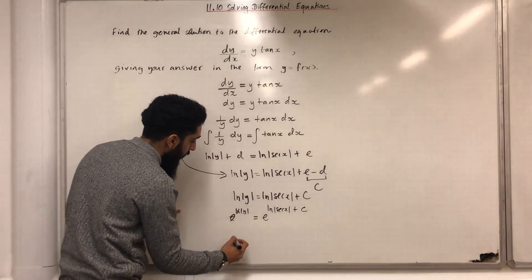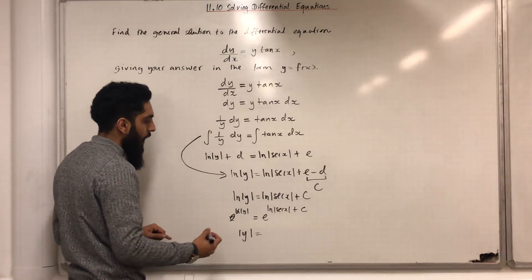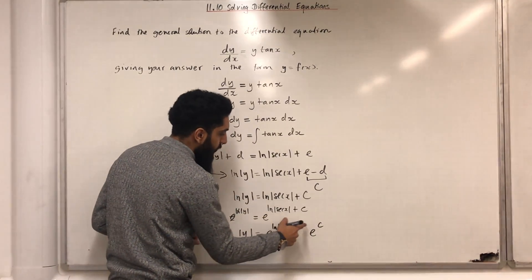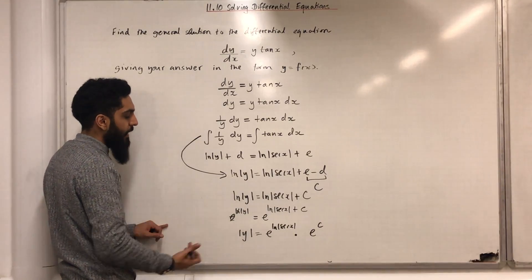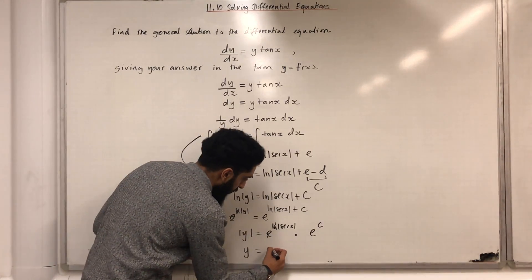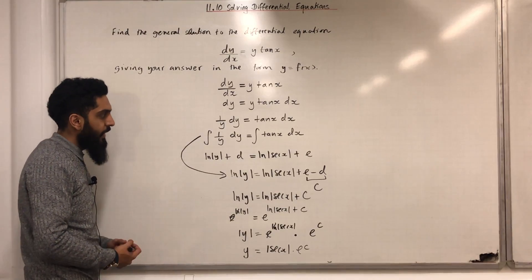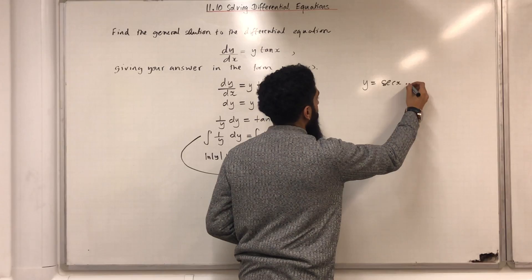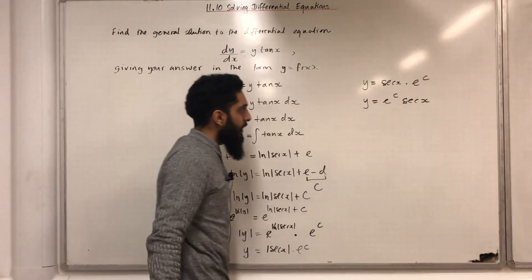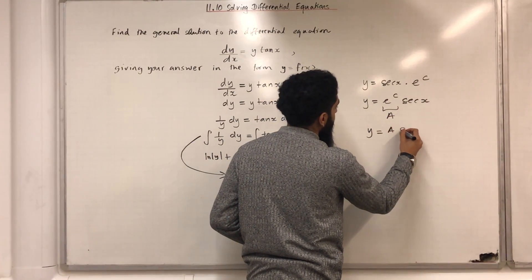Now e and ln cancel, so I have |y| equals. This I can split into two parts using laws of indices: e to the power ln|sec x| multiplied by e to the power c — I need to multiply because these two powers are added. I can cancel the e and ln, giving |y|, which is just y, equals |sec x| multiplied by e to the power c. The mod of sec x is just sec x, so y equals sec x multiplied by e to the power c, which I can write as y equals e to the power c times sec x. Now e to the power c is a constant, I can call it a.